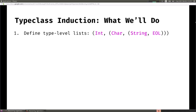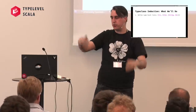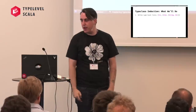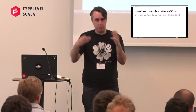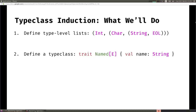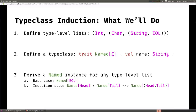To discuss type class induction, we're going to define something called a type-level list. Just as when we defined length of lists we needed an inductive structure, we're going to need an inductive structured type. We're not going to use the Shapeless type-level list - to keep it simpler, we're going to use tuples. Then we're going to define a type class called Named, just to illustrate an example. Named is a really simple type class that associates with each type a string name for it. Then we're going to derive a Named instance for any type-level list, by starting with a base case for Named of EOL, and doing an induction step where we say: if you have a Named instance for the head and a Named instance for the tail, you can produce a Named instance for the tuple of head and tail.